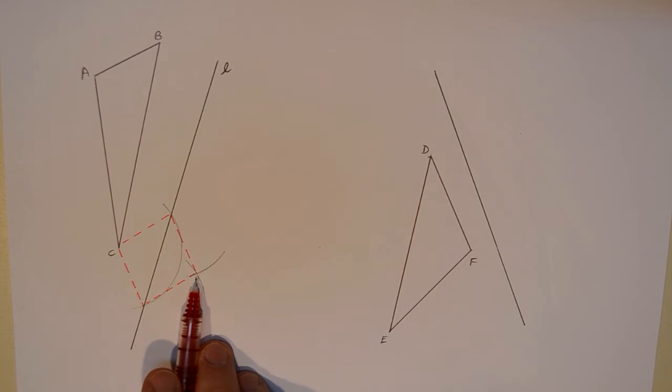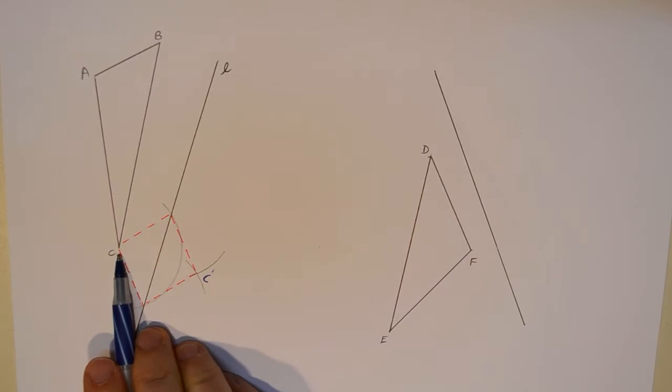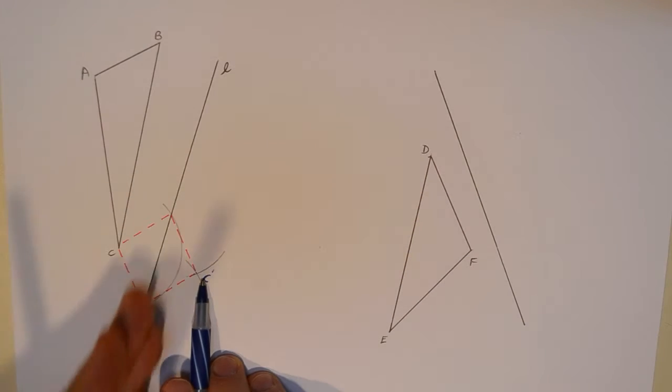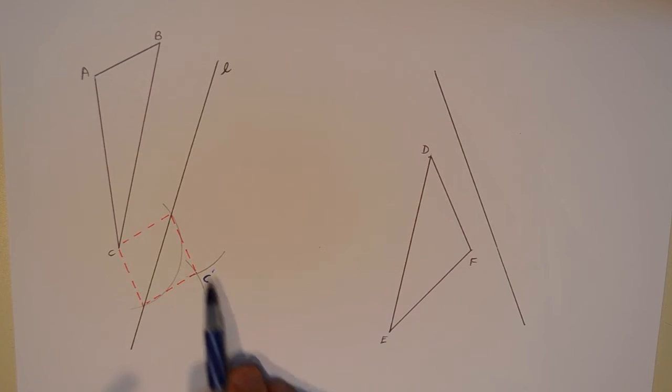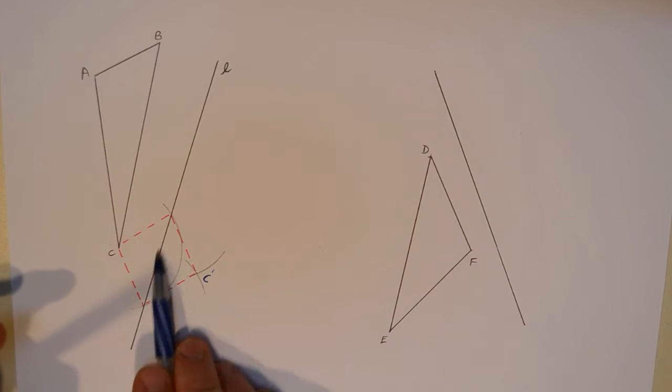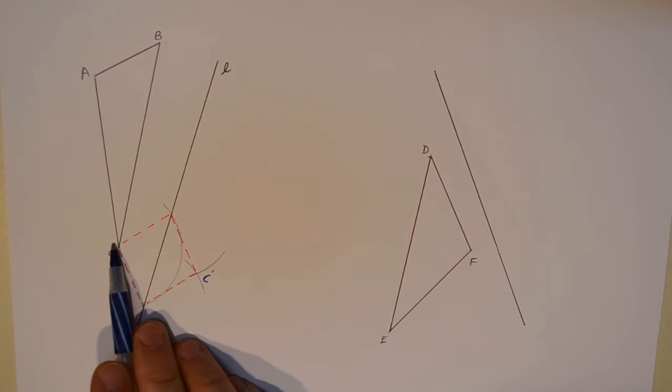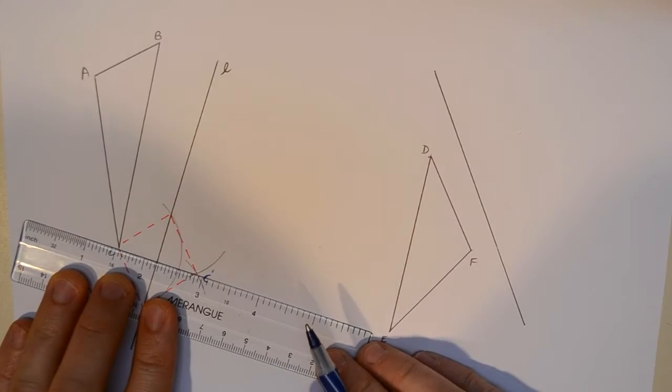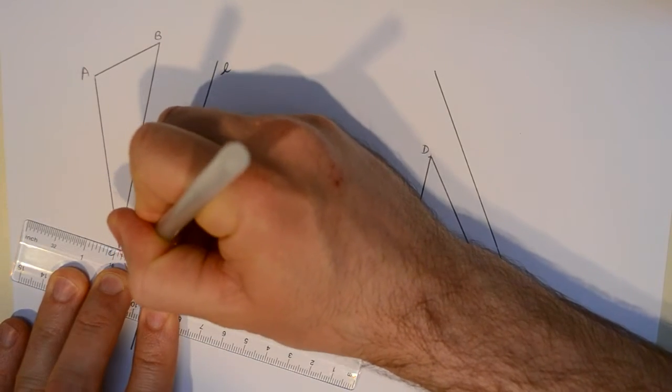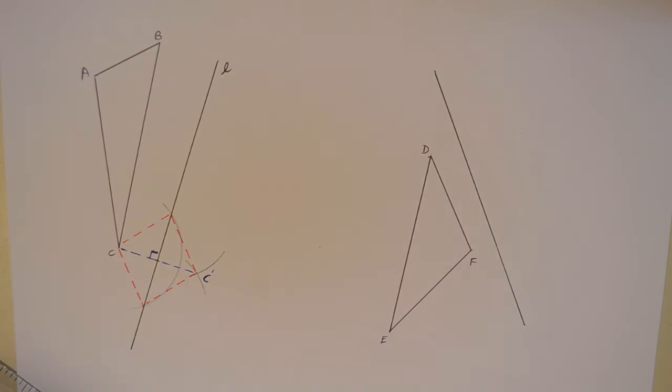So, the diagonals of this rhombus, one of them is the line of reflection, the other is the line connecting C and this point over here. Which, if you haven't figured out already, that's going to be C prime. Because, remember what a line reflection is doing. A line reflection takes a point and moves it so that the line of reflection is the perpendicular bisector between the point and its image. By constructing this rhombus, we've guaranteed that that is perpendicular to the line of reflection, and since the diagonals of a rhombus bisect each other, it's a parallelogram, then, of course, that's also going to be the midpoint, making this a perpendicular bisector.